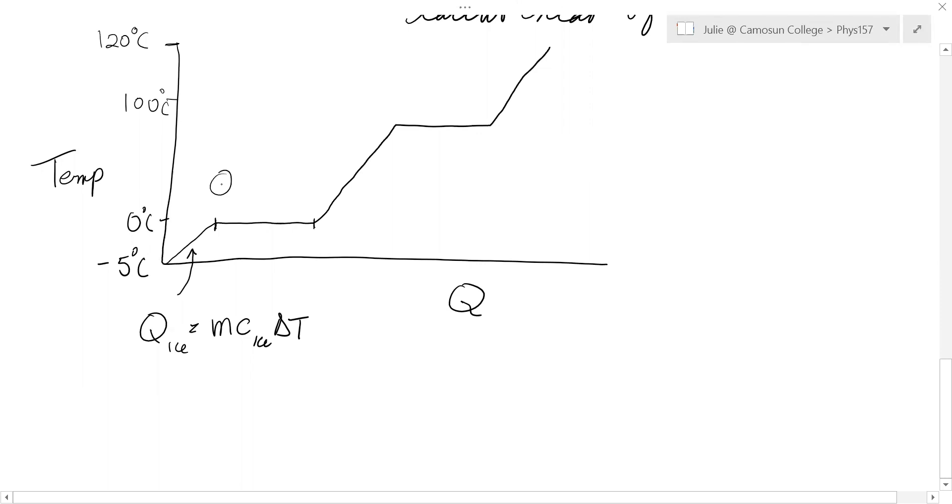This flat part, this would be the MLF part. The temperature doesn't change. At the left-hand side here, it would be all ice at 0. Then as it starts to melt, you'd have some ice, some water, some ice, some water. As you move over to the right, pretty soon you've got just water at 0 degrees. All the ice is melted and you've absorbed that amount of heat.